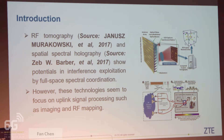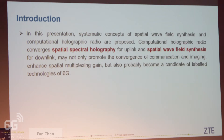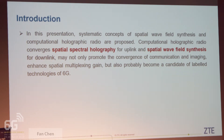However, this technology seems to focus only on uplink signal processing such as imaging and IF mapping. Therefore, in this presentation, systematic concepts of spatial wave field synthesis and computational holography radio are proposed. Computational holography radio converges spatial holography for uplink and spatial wave field synthesis for downlink, which may not only promote the convergence of communication and imaging and enhance spatial multiplexing gain, but also probably become a candidate technology for 6G.